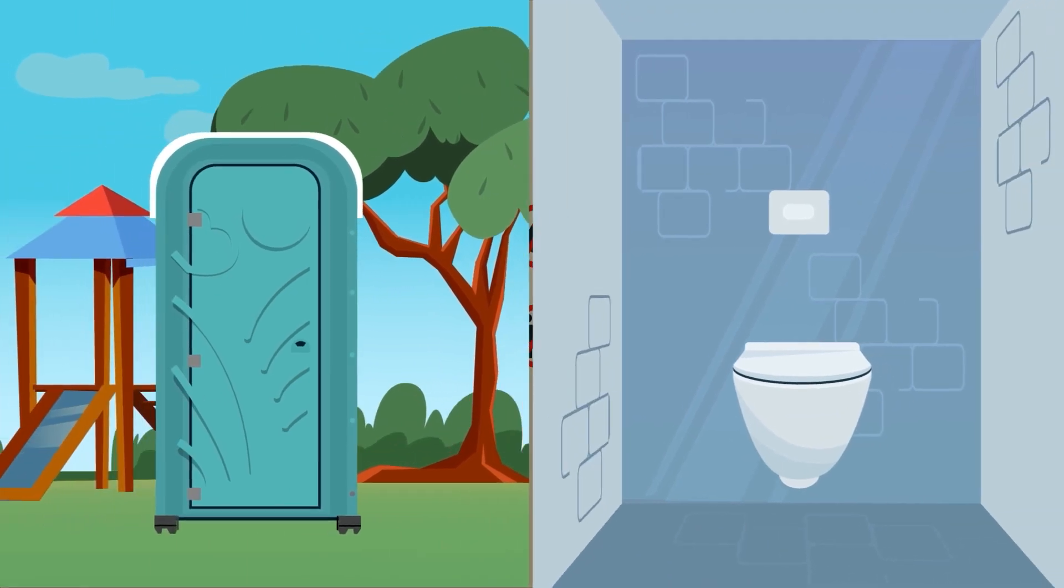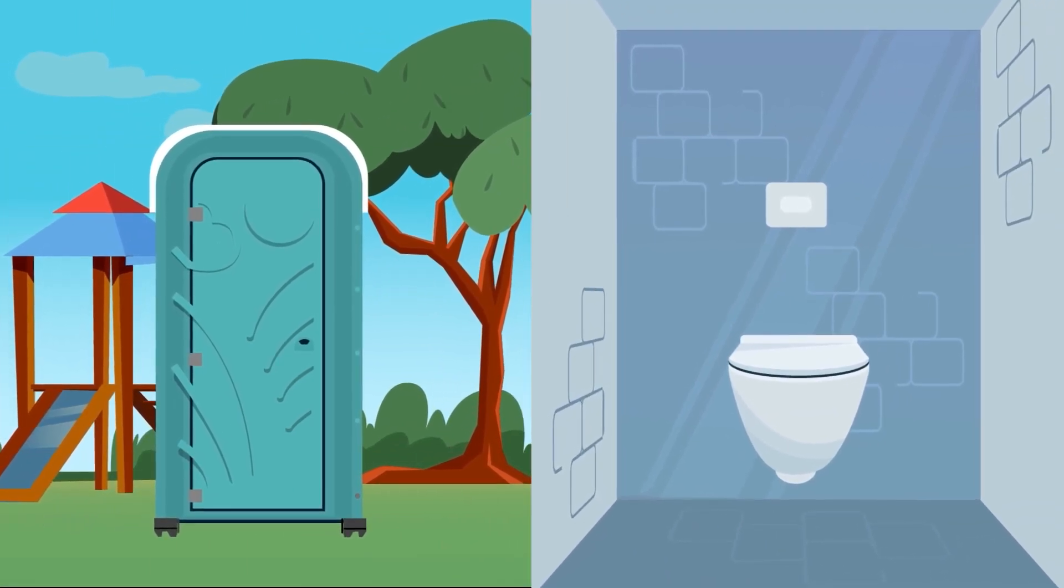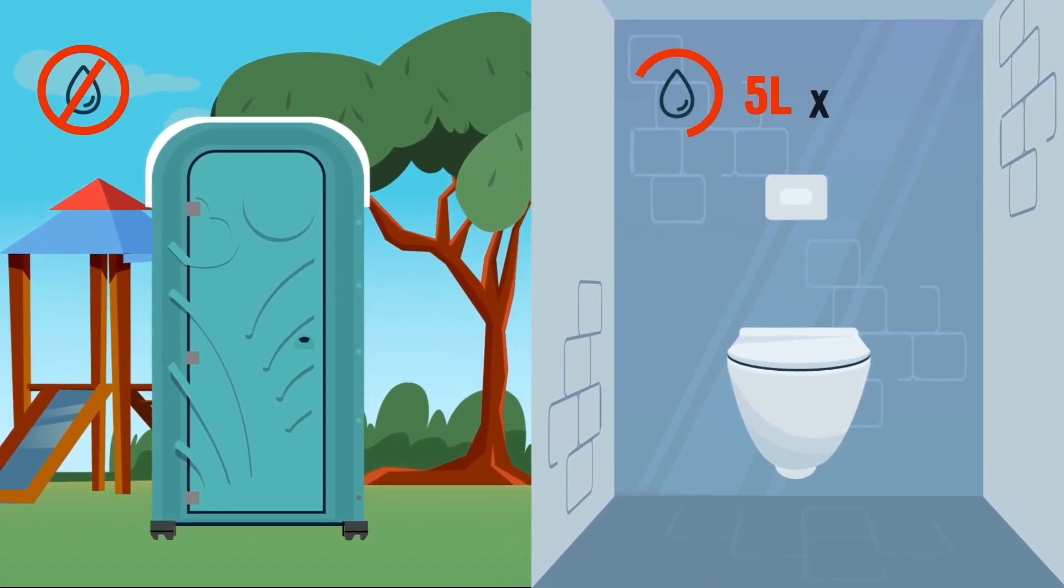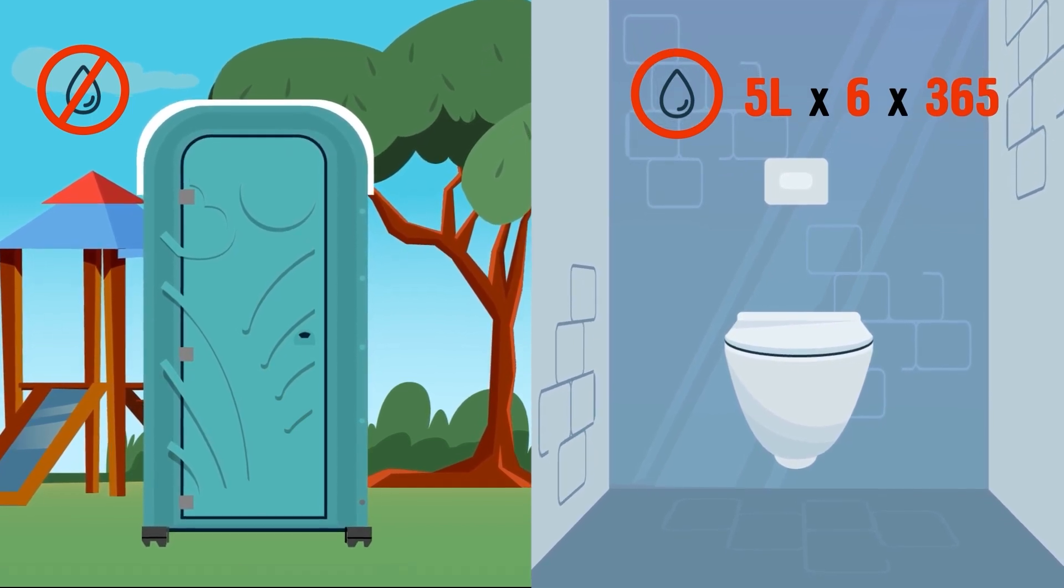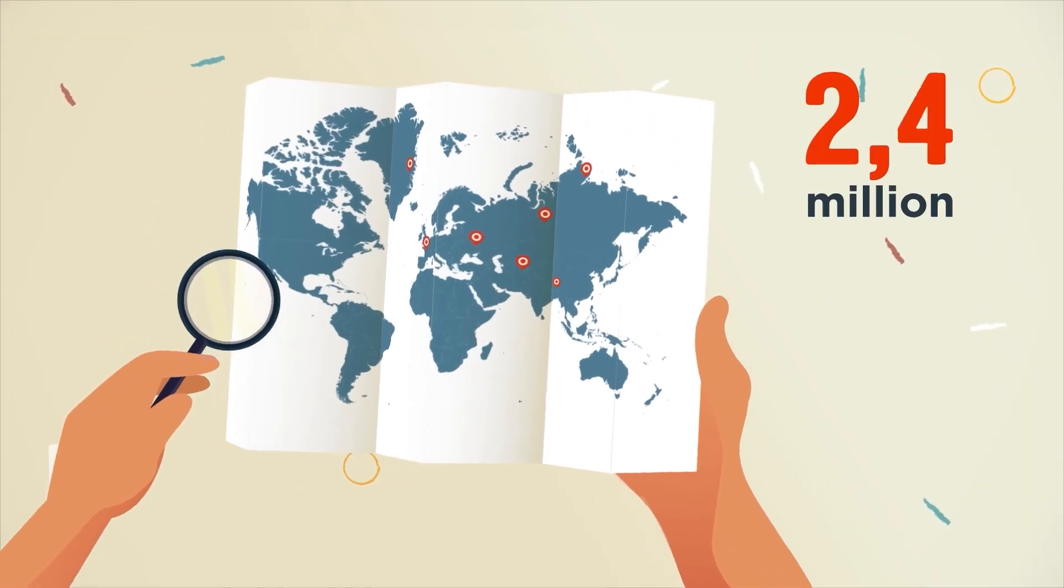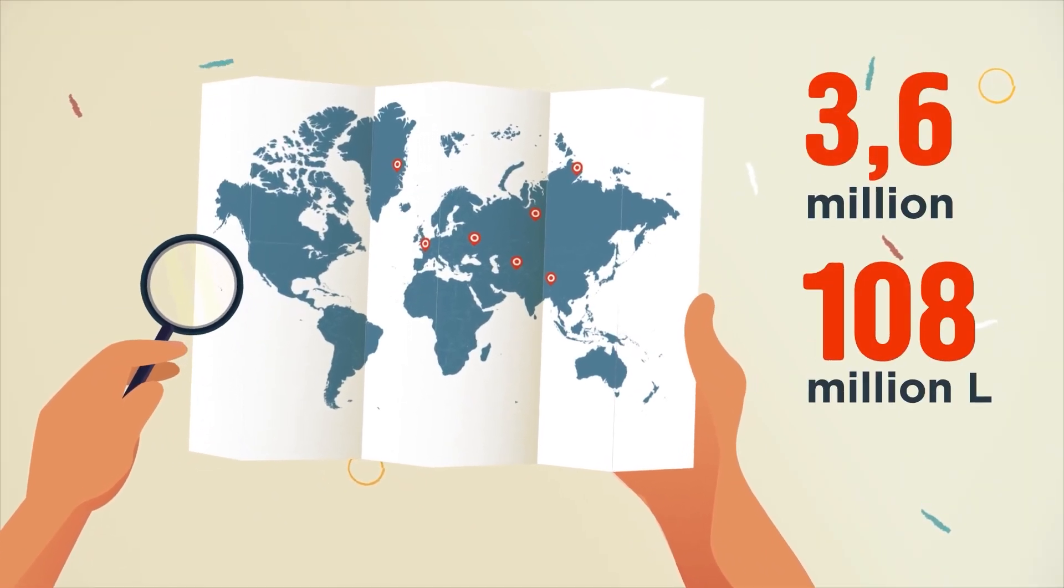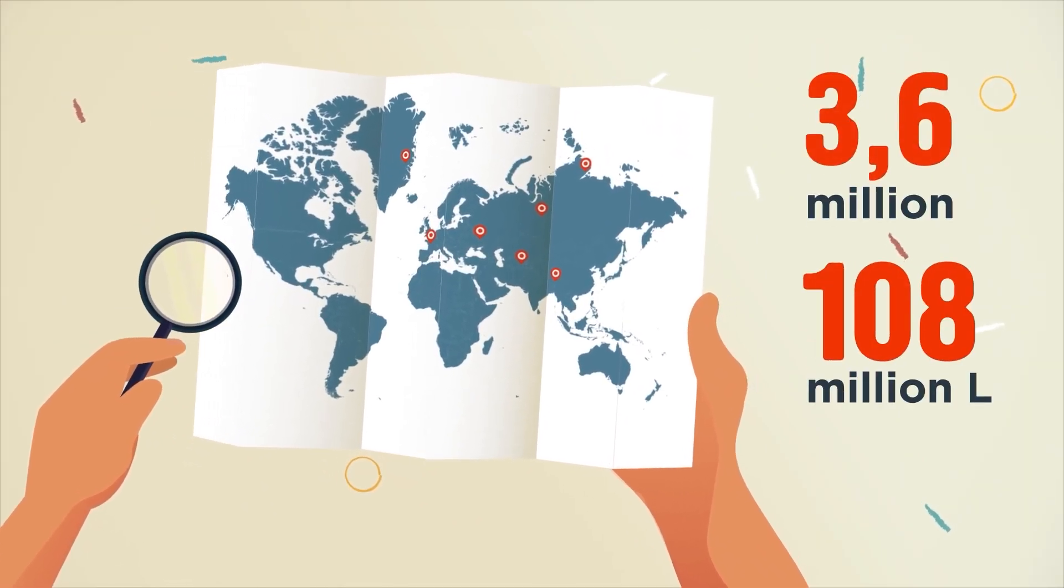The portable sanitation industry helps to conserve this scarce resource. An average flush is 5 liters of water, and a household toilet gets flushed 6 times a day. And 3.6 million portable toilets around the world save 108 million liters of water daily,